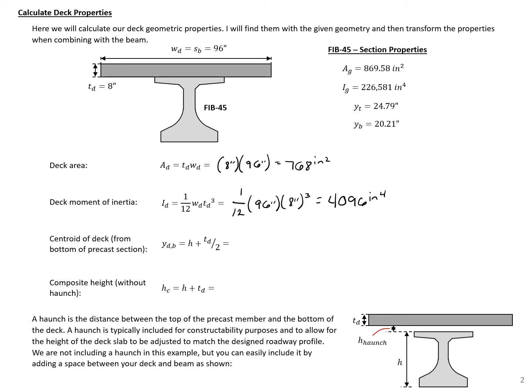The centroid of the deck is the distance from the bottom of our section to the centroid of the deck. This distance is 45 inches — the depth of our precast section — plus 8 inches over 2, which gives us 49 inches. The overall composite height is 45 inches plus 8 inches, which equals 53 inches.